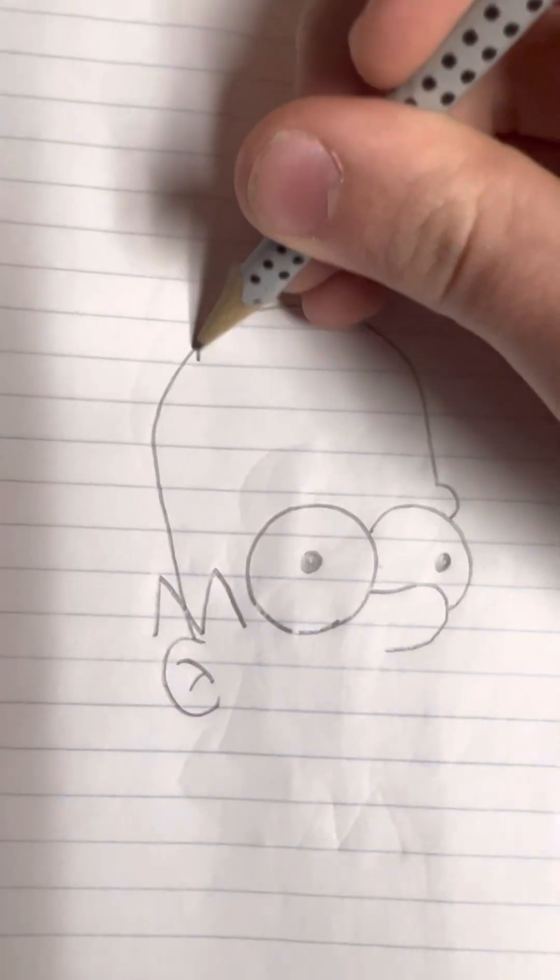And then his ear is just a circle. Or not a circle, but like a C. And then the inside is like that. And then his hair, the side of it is like an M here. And then the top is two.